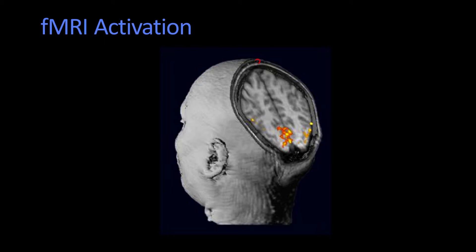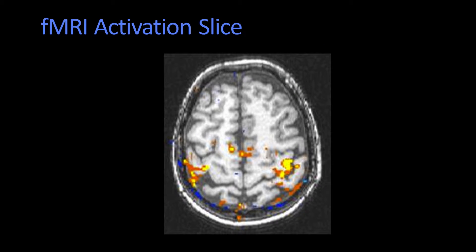This is of course a reconstruction based upon the density, and here you can see the activity being measured. This is a three-dimensional reconstruction. This is what a slice would actually look like — a single activation slice. These colors are different levels of activation compared against a background activation.